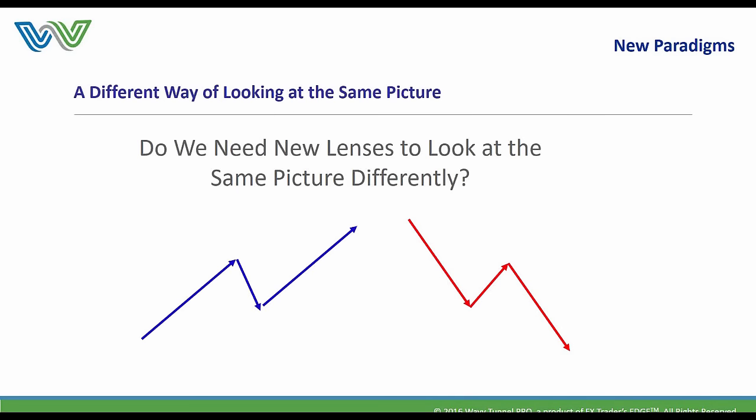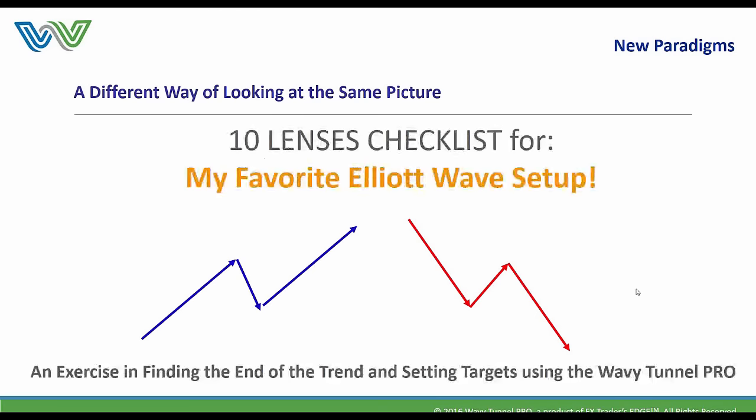Do we need new lenses to look at the same picture differently? You might see waves 1, 2, 3 or waves A, B, C — trend, correction, trend — buyers in control on the left, sellers on the right, the trend is your friend, a 1-2-3 reversal pattern, a zigzag, a flag pattern. Now let's put all these things together in an exercise: finding the end of the trend and setting targets.